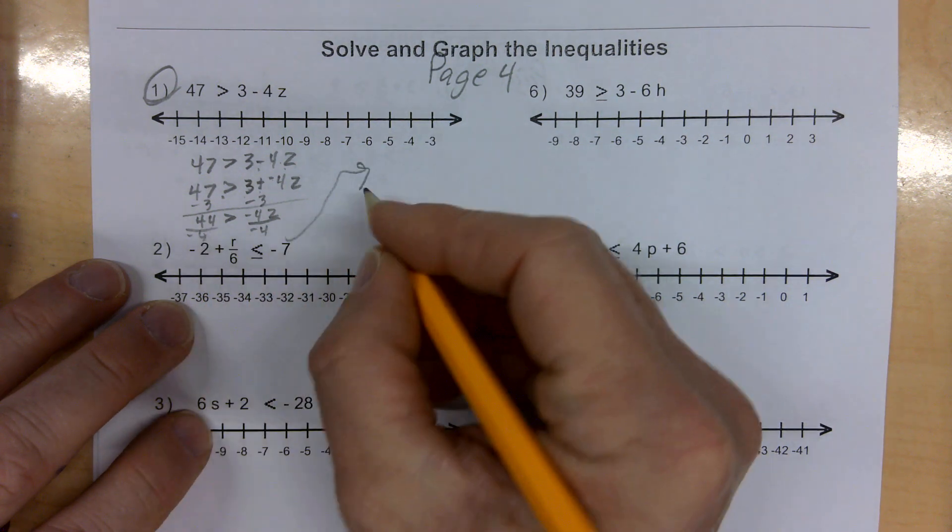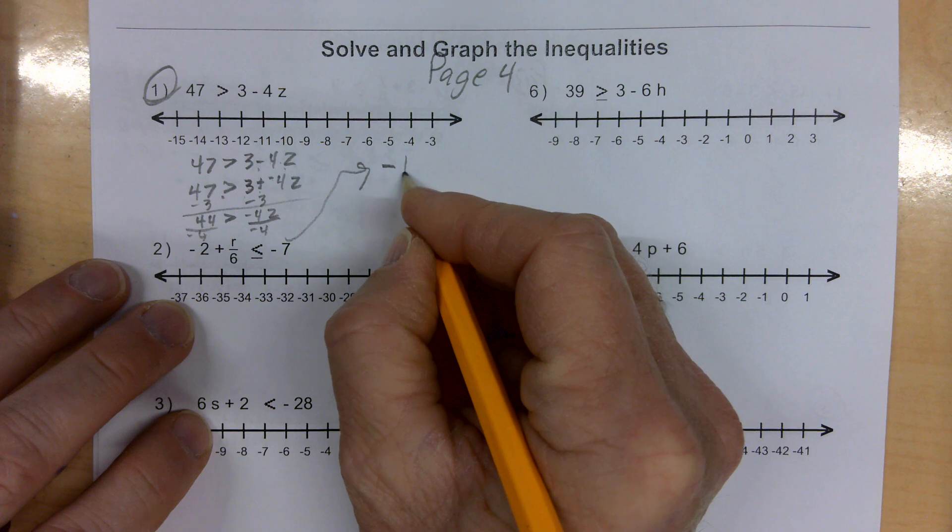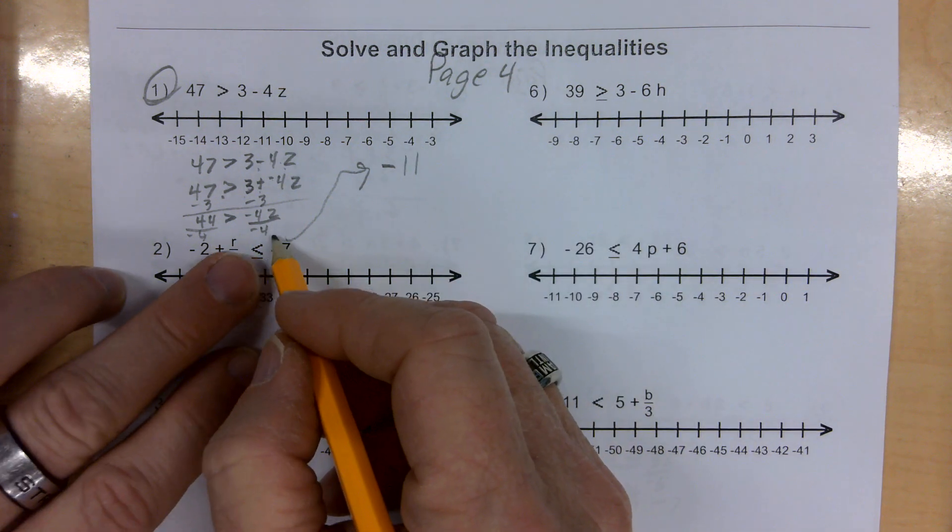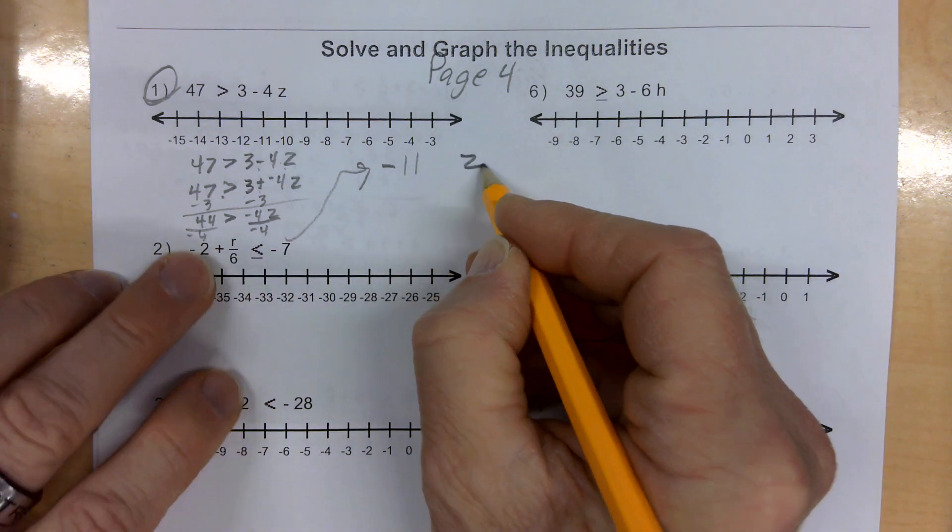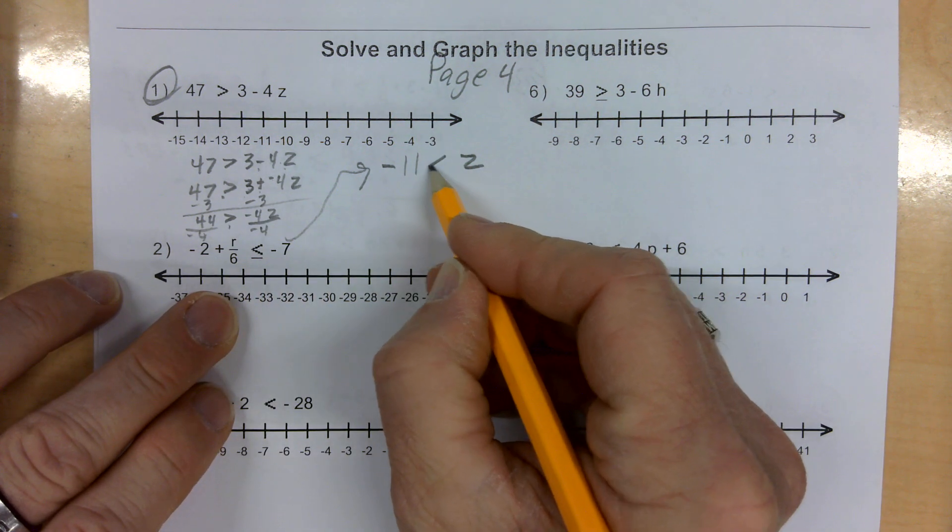Positive divided by negative is a negative. 44 divided by 4 is 11. This side becomes z. And I flip my sign, which was greater than. Now, it says less than.